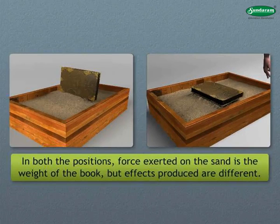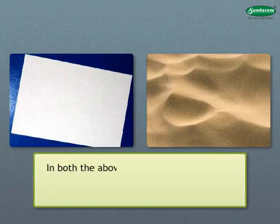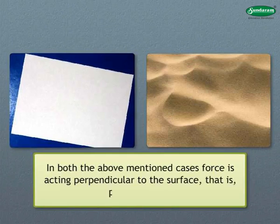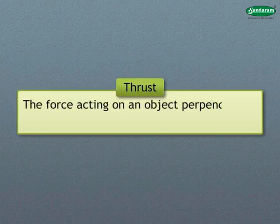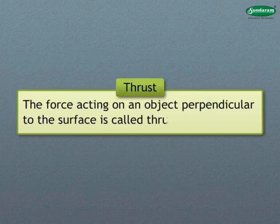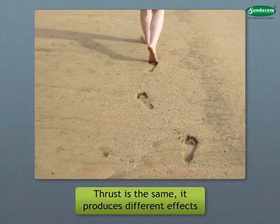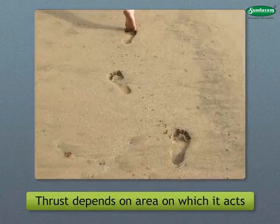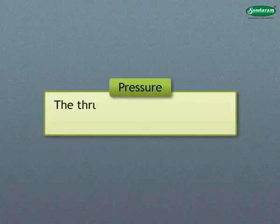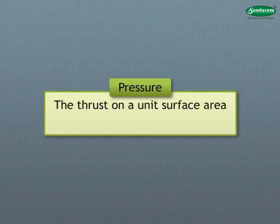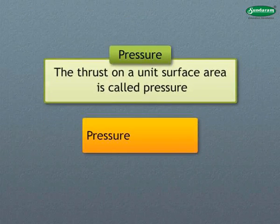In both positions, the force exerted on the sand is the weight of the book, but effects produced are different. In both the above-mentioned cases, force is acting perpendicular to the surface, that is paper or sand. The force acting on an object perpendicular to the surface is called thrust. Even though thrust is the same, it produces different effects because the effect of thrust depends on the area on which it acts.